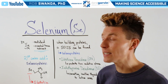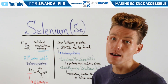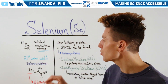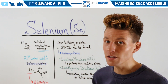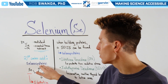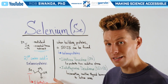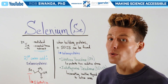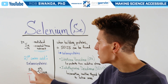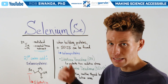Selenium is a metalloid, meaning that it has properties of both metals and non-metals, and it's an essential trace nutrient in order to make that 21st amino acid known as selenocysteine. It has a structure that looks like this, and it's very similar to another amino acid known as cysteine, but instead of having sulfur present, it instead has selenium.